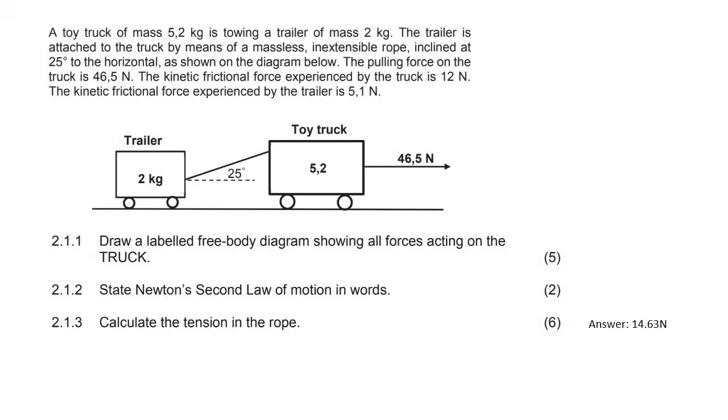Here it says that we have a toy truck of mass 5.2 kilograms and it's busy towing a two kilogram trailer. Let's see if there's anything interesting here. The kinetic friction experienced by the truck is 12 newtons, so this one has 12 newtons of friction and then the trailer has 5.1 newtons of friction.